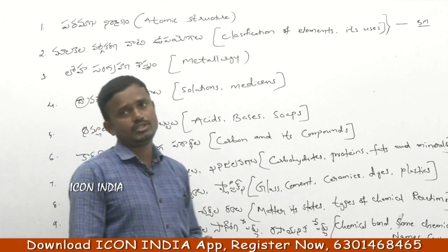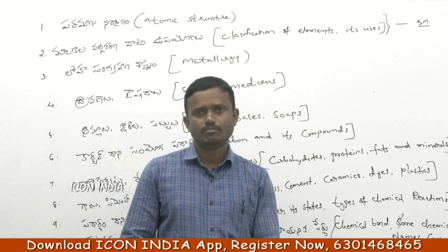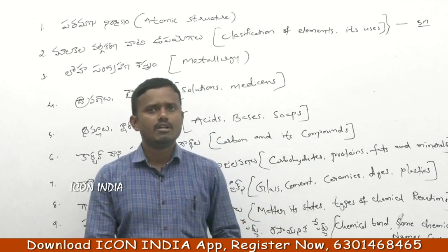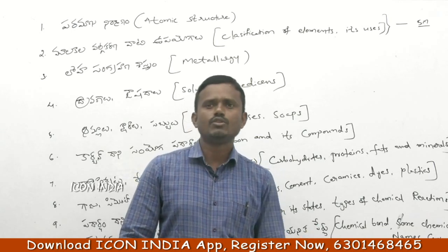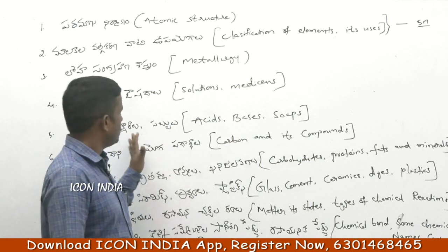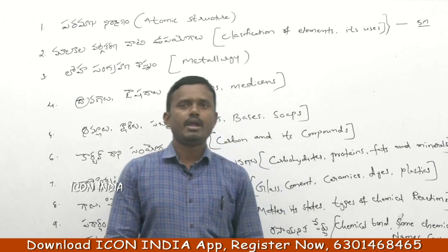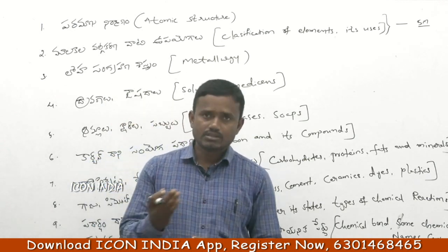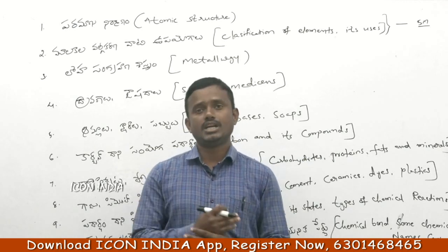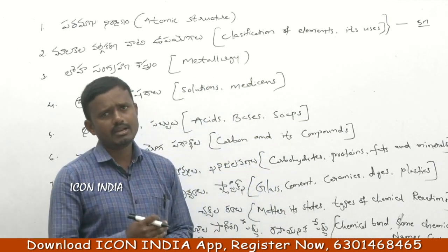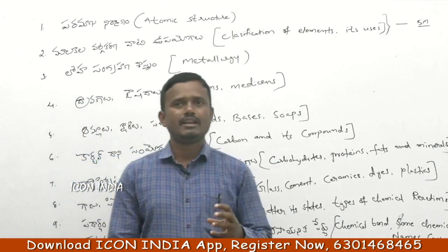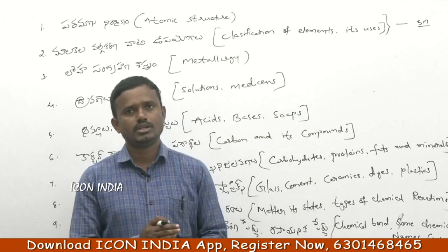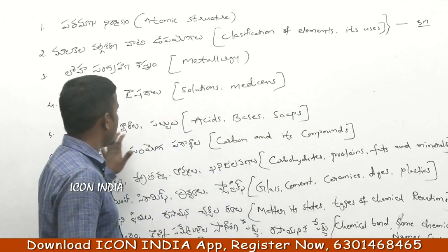For acids and bases, we discuss antacid medicines with chemical bases like sodium carbonate, sodium bicarbonate, calcium hydroxide, aluminum hydroxide, and milk of magnesia. These are chemical forms used as antacid syrups.